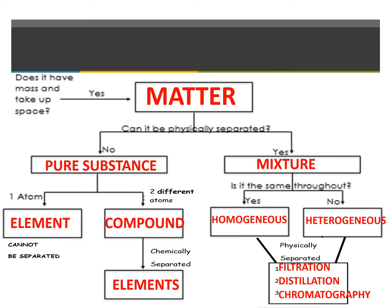Let's do a brief summary of last time's video. If we look at an item and it has a mass and a volume — meaning it takes up space — it's considered matter. Matter can sometimes be physically separated, and sometimes it cannot. If we cannot separate it physically, it's considered a pure substance. If we have a single atom of a specific item, it's going to be an element, and elements cannot be separated. If we have two or more different atoms, we're considered a compound, and compounds can be separated, but it has to be chemically separated into elements.